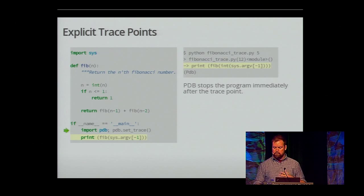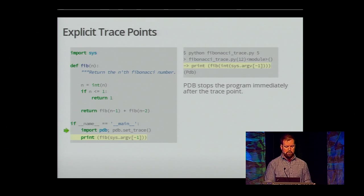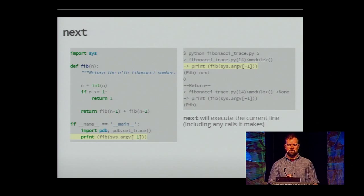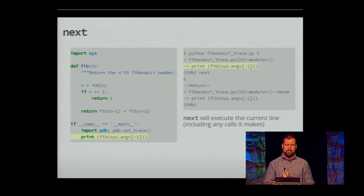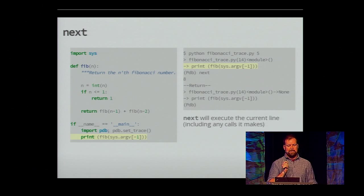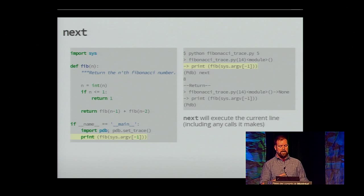From here, there are a few really basic commands to cover briefly. I can say next if I wanted to execute the entire next statement. You can see if I did next here, it's going to execute that entire print statement for me — it's going to call Fib with sys.argv, print it out, show the return, which means I've reached the end of a block, and then wait for the next command.